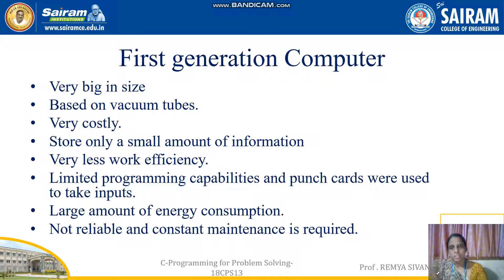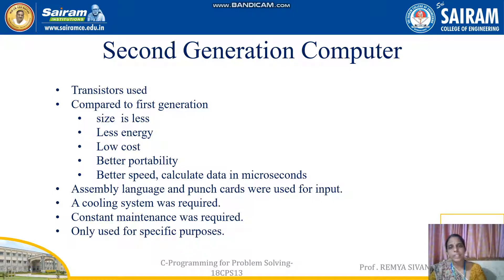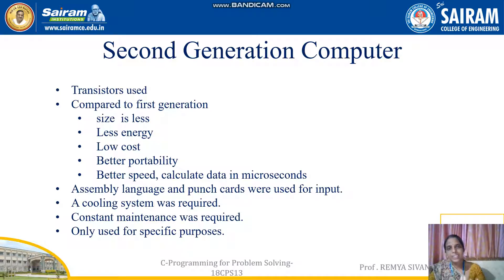Second generation computers used transistors. Input was taken using punch cards along with assembly language. Because transistors generate heat, a cooling system was required, and constant maintenance was still needed. These computers were used only for specific purposes. Compared to first generation, second generation computers were smaller in size, could store more information, were faster, consumed less energy, cost less, and had better portability.